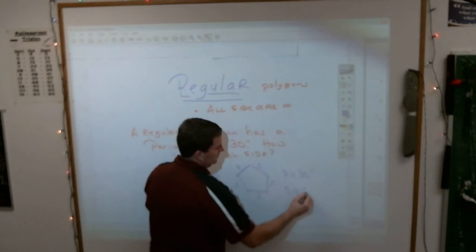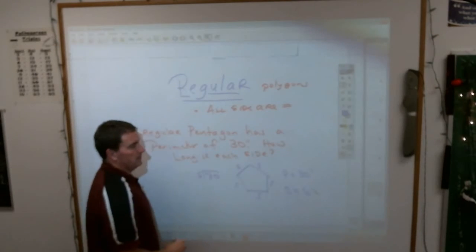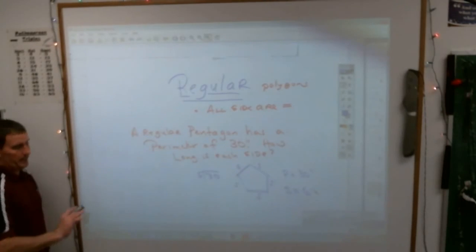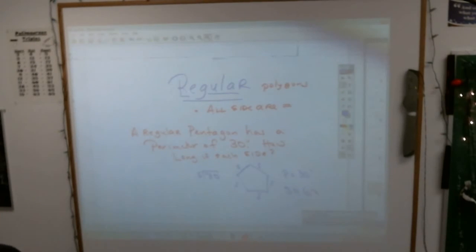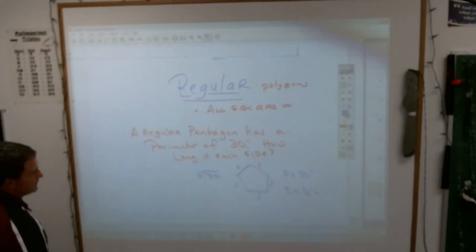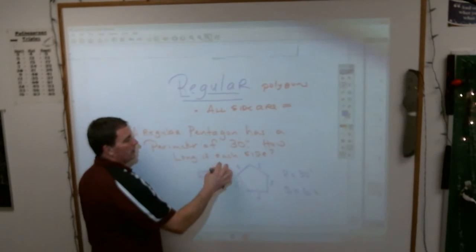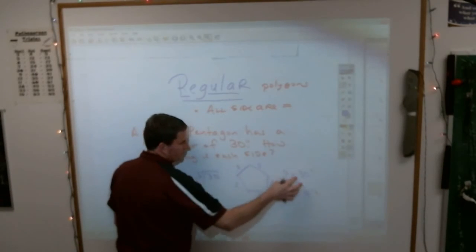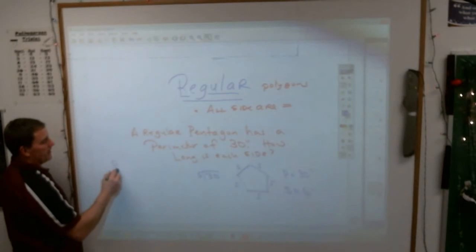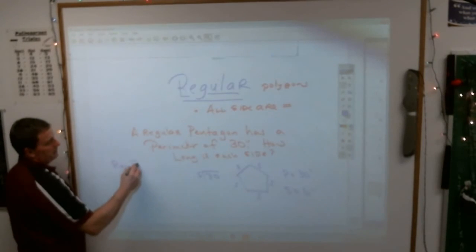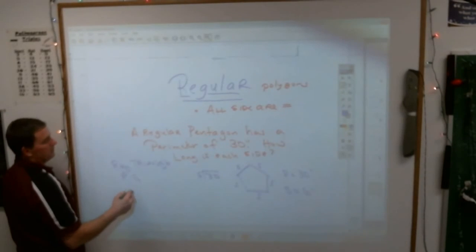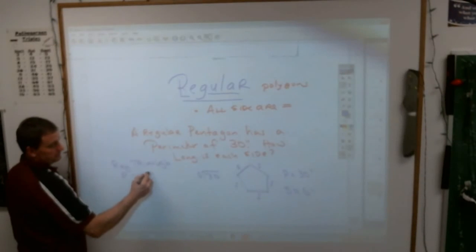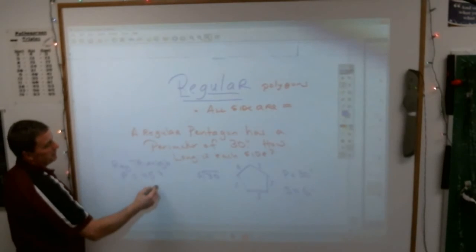Each side would have to equal 6 inches. And they'll do that with octagons and hexagons and heptagons and dodecahedrons and whatever else it is. Quadrilaterals, triangles. Just make sure that you draw the picture out, write the perimeter. You know, if it was a regular triangle whose perimeter equaled 45, how long would each side be?